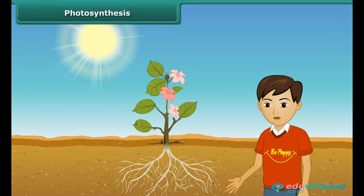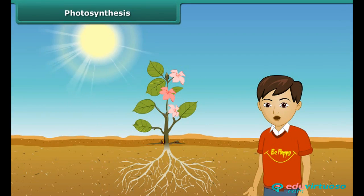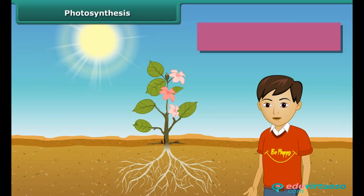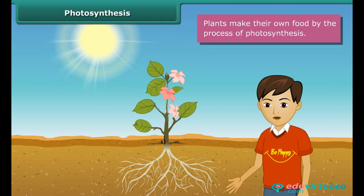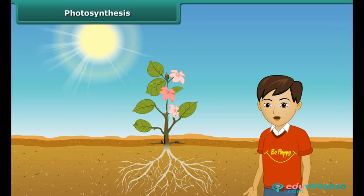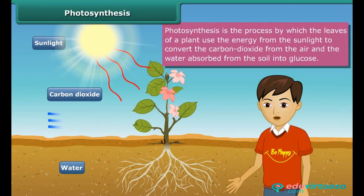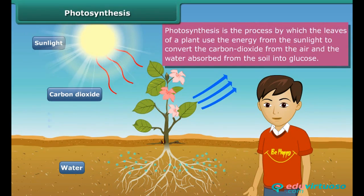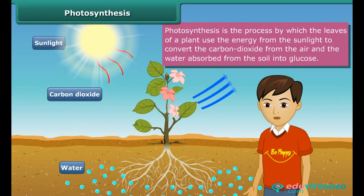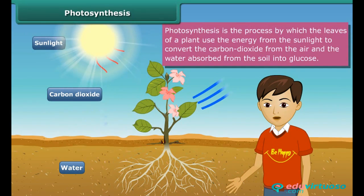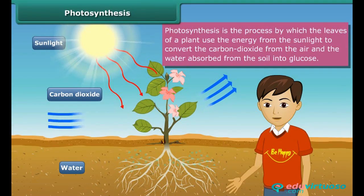Like animals and human beings, plants also require food for their survival. However, unlike animals and human beings, they can make their own food by the process of photosynthesis. In this process, the leaves of a plant use the energy from sunlight to convert the carbon dioxide absorbed from the air and the water absorbed from the soil into glucose.